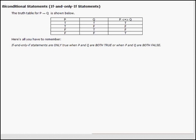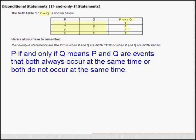Let's take a closer look at the if-and-only-if statement. P if and only if Q is indicated with a double arrow. The truth table has the four usual sets of values for P and Q. P if and only if Q is true when both P and Q are true, and true when both P and Q are false. It is false if P is true and Q is false, and false when P is false and Q is true. In other words, the if-and-only-if statement is true when P and Q both have the same values.